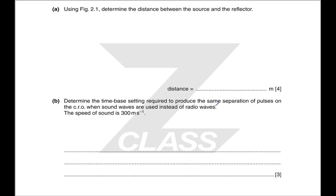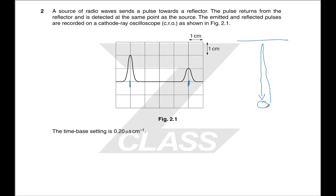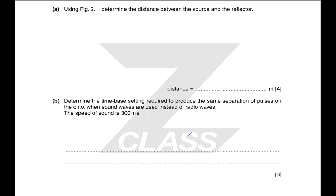Determine the time-base setting required to produce the same separation of pulses when sound waves are used instead of radio waves. You are given the speed of sound and you know the distance, so work out the time taken for sound to go there and back — to travel twice the distance. You need four centimetres to represent that same time difference, so divide the time by four to get the time-base setting you need.